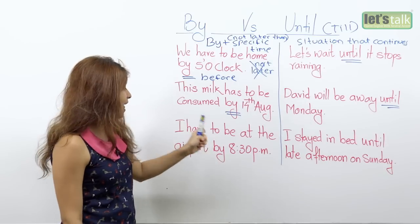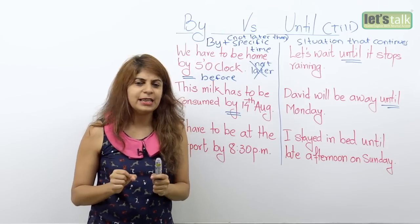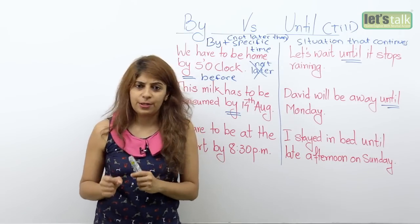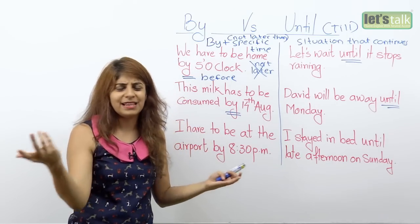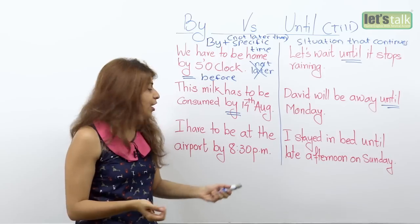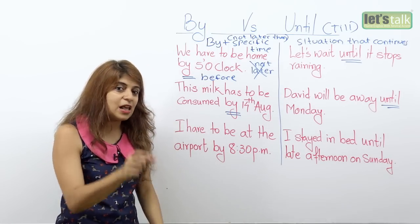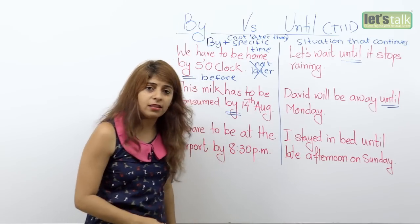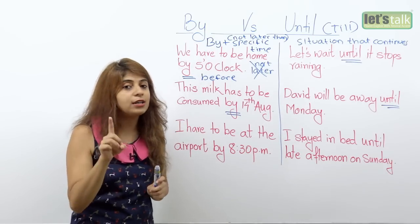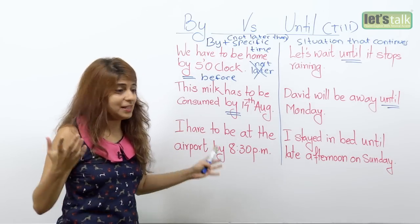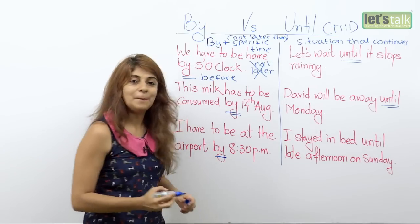The next example: 'I have to be at the airport by 8:30 PM.' So probably your flight is at 9:30 PM and the check-in counter shuts by 8:30 PM. It means you can either get to the airport before 8:30 PM or at most by 8:30 PM, but not later — or else you will not be able to take the flight. That's why we use the word 'by'.